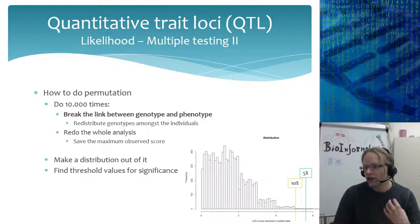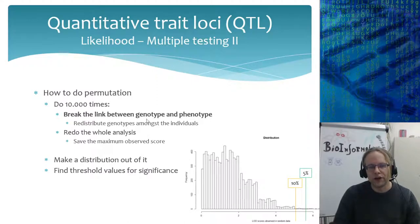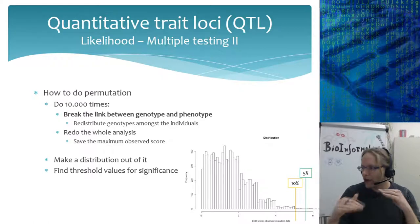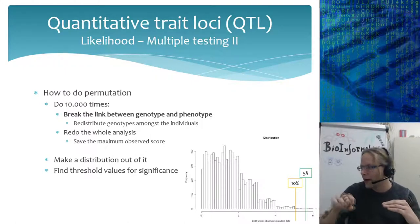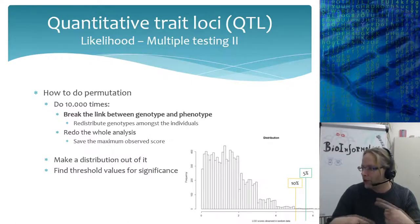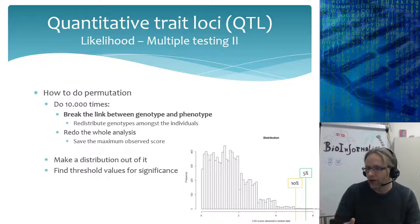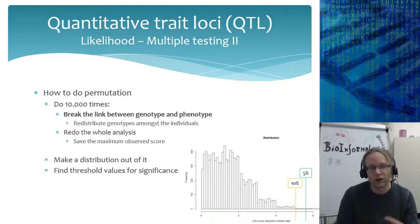Permutation is a strategy in which instead of deriving your threshold using a Bonferroni correction, you break the link between the genotype and the phenotype. For each individual you have a vector of genotypes, and you randomly shuffle these so every individual gets a new genotype. You pull a random genotype out of the bag for each individual, then redo your mapping and remember the maximum score observed. When you randomly distribute genotypes there should not be an association between phenotype and marker.